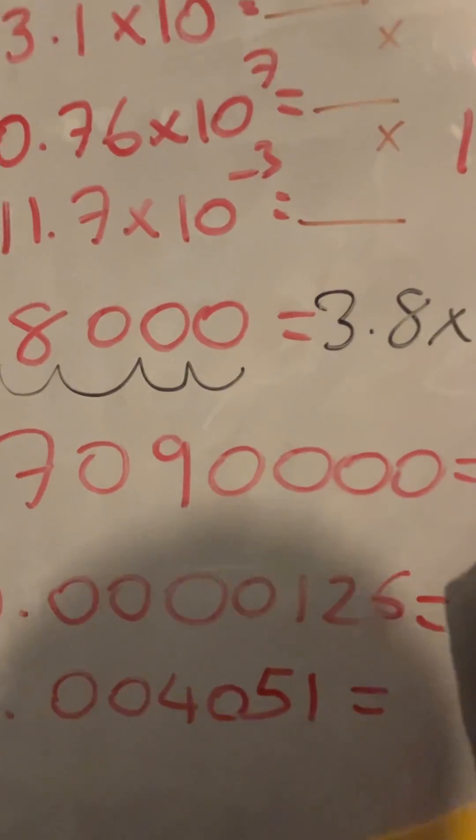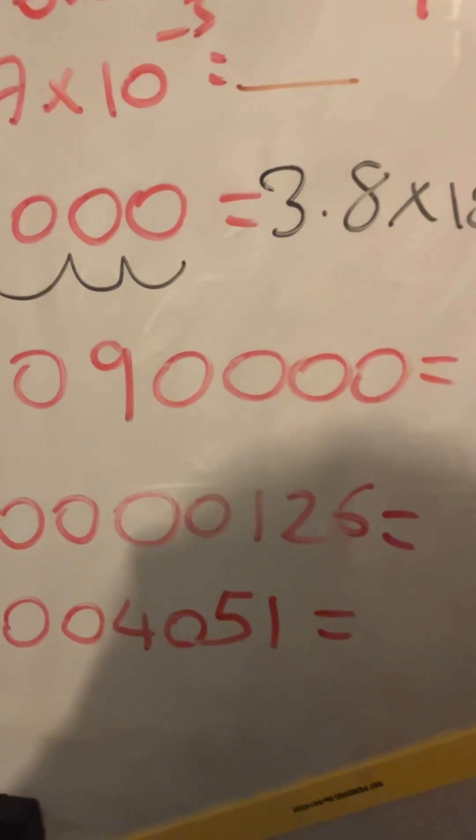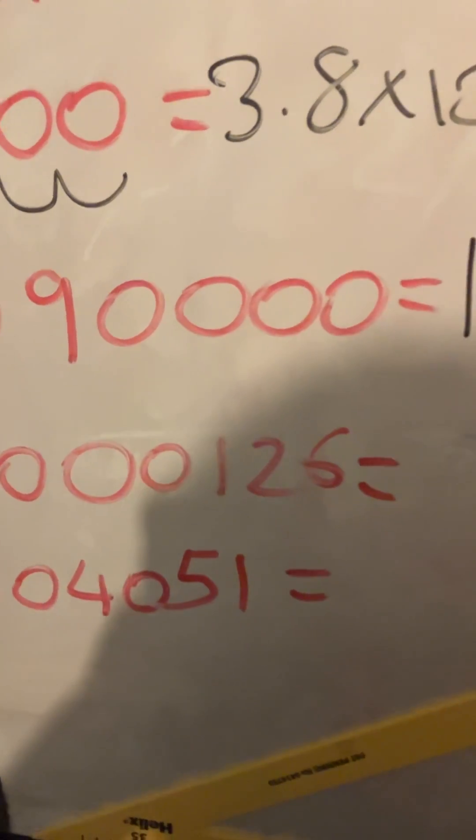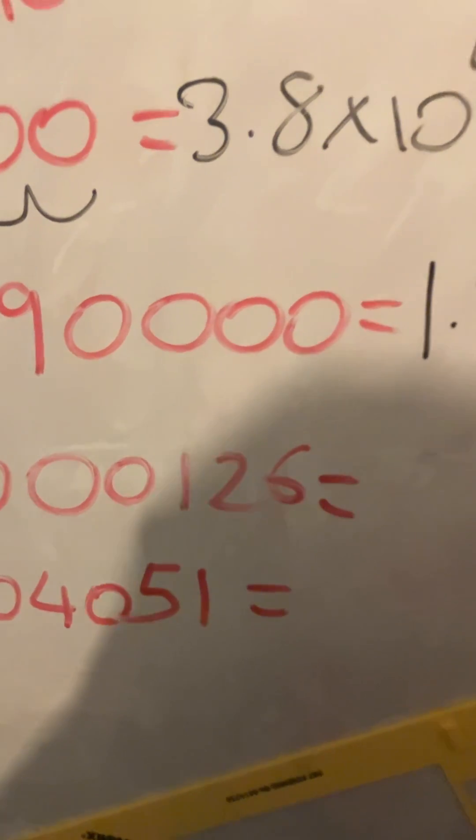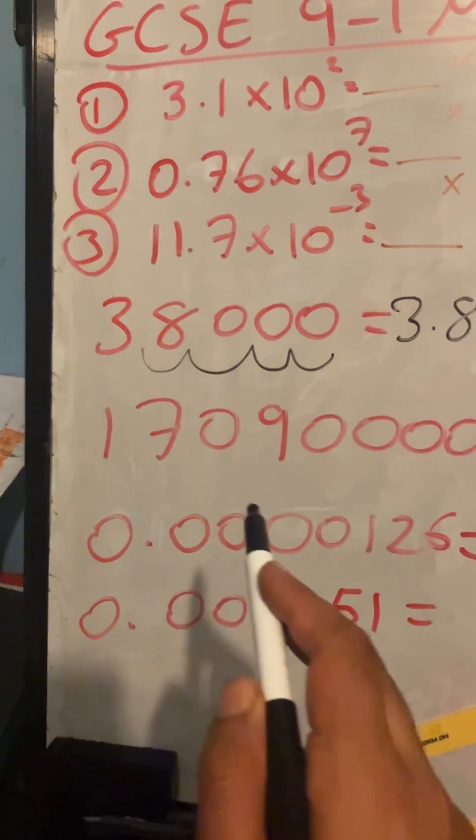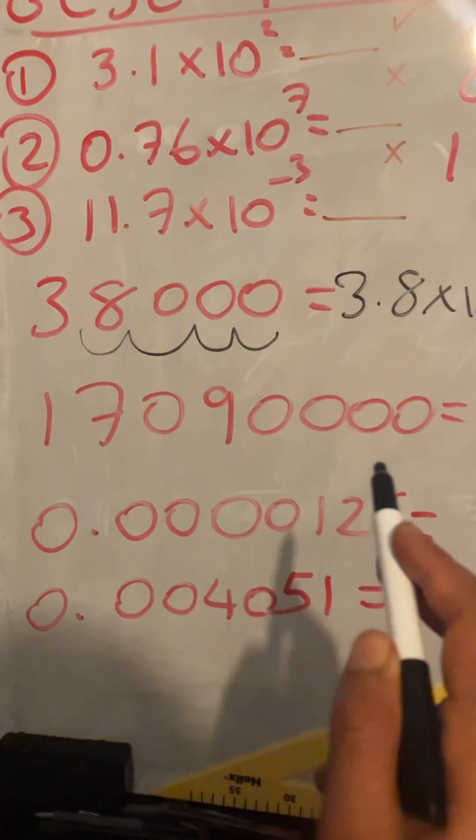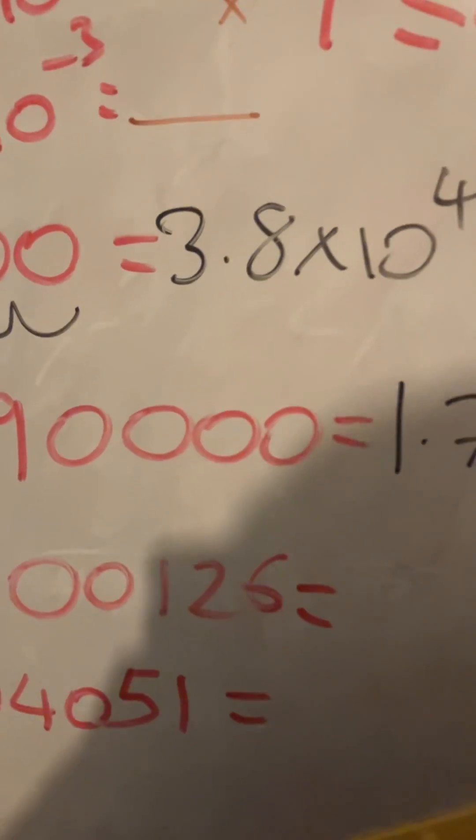This next one, it's going to be 1.709 times 10 to the power of, counting 1, 2, 3, 4, 5, 6, 7, times 10 to the power of 7.